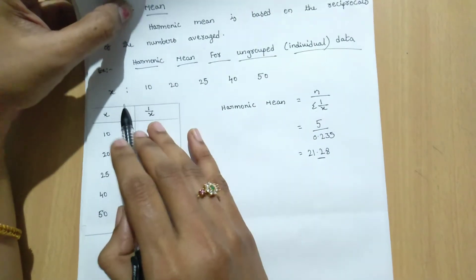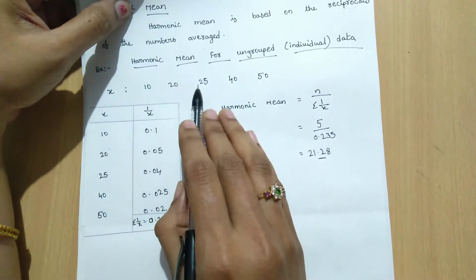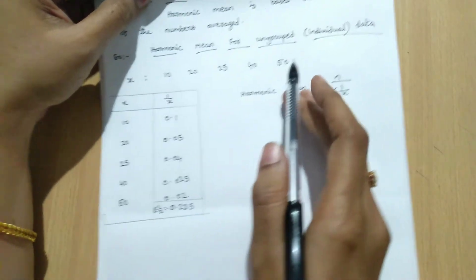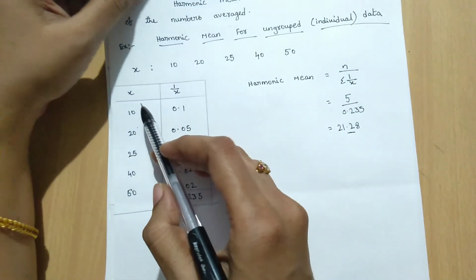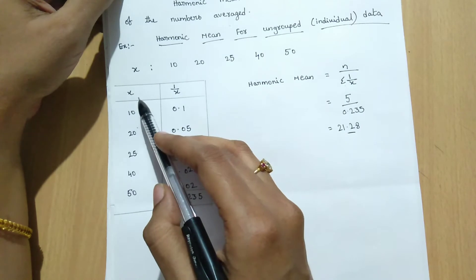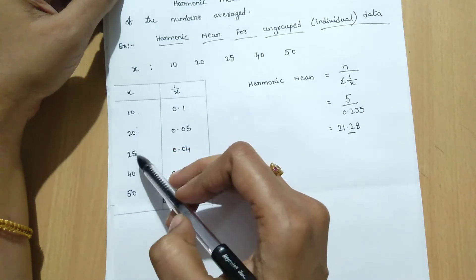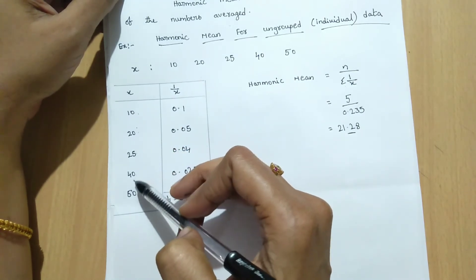Here's an example problem. The x values are 10, 20, 25, 40, and 50. First we list the x values: 10, 20, 25, 40, and 50.